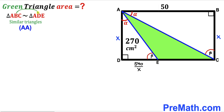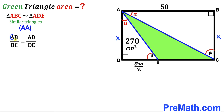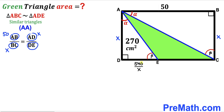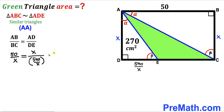Therefore right triangles ABC and ADE are similar by the Angle-Angle similarity theorem. Since they are similar, we set up the proportion: AB / BC = AD / DE. Substituting our known values: AB = 50, BC = X, AD = X, and DE = 540 / X. So the proportion becomes 50 / X = X / (540 / X).